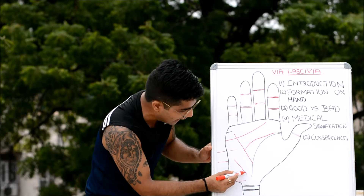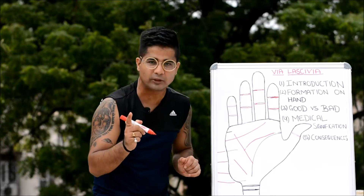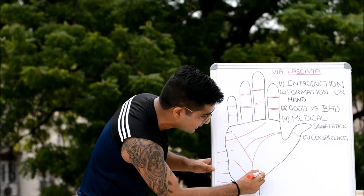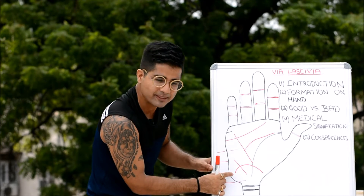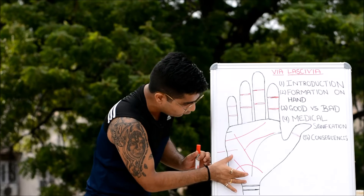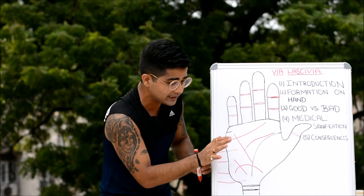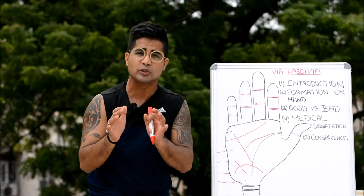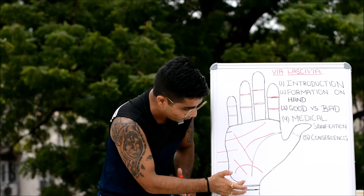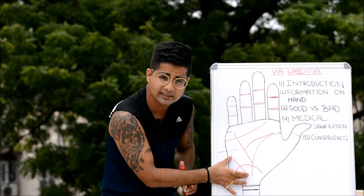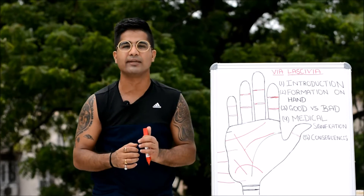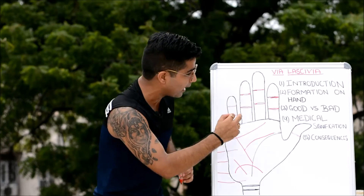Via lascivia gets spotted when it starts from the lower mount of the Moon going towards the upper mount of the Moon — that is one formation. Many palmists have also recognized an inverted semicircle formation as via lascivia as well. So the formation of via lascivia is of two types: one is a slanting line parallel to the line of Mercury — and it is not an eligibility requirement that the line of Mercury needs to be present; this line can be spotted independently on the palm. The second type is an inverted semicircle connecting the mount of Venus with the mount of Moon.